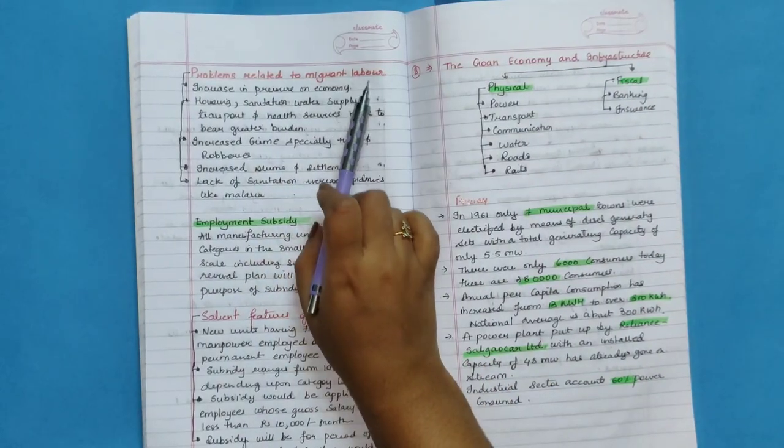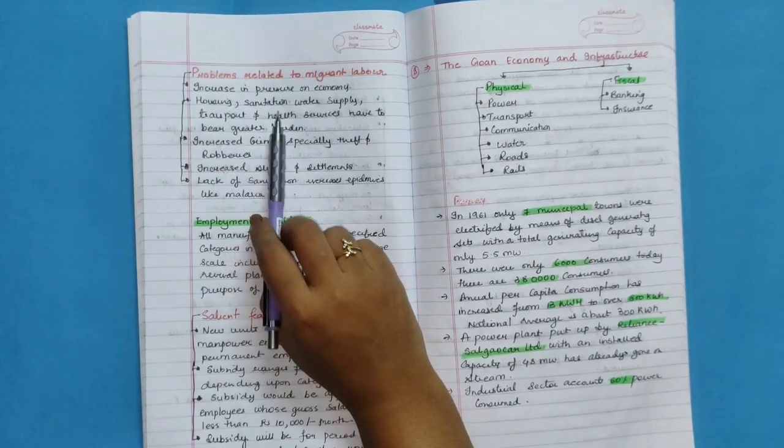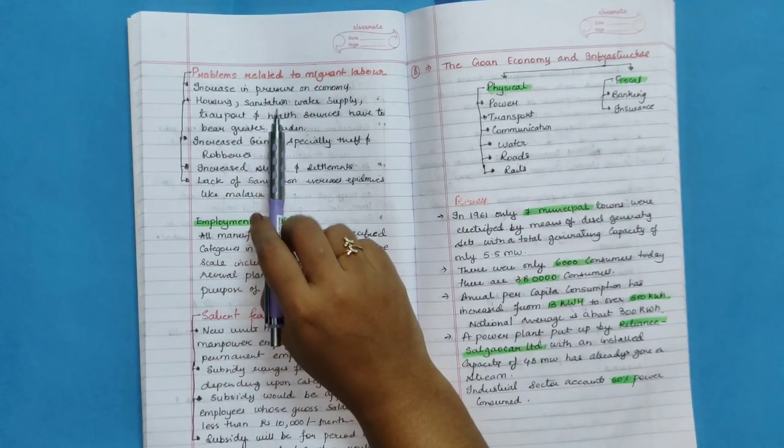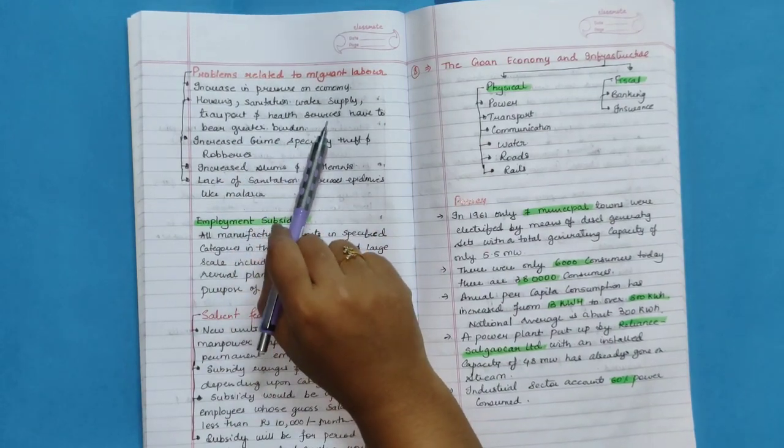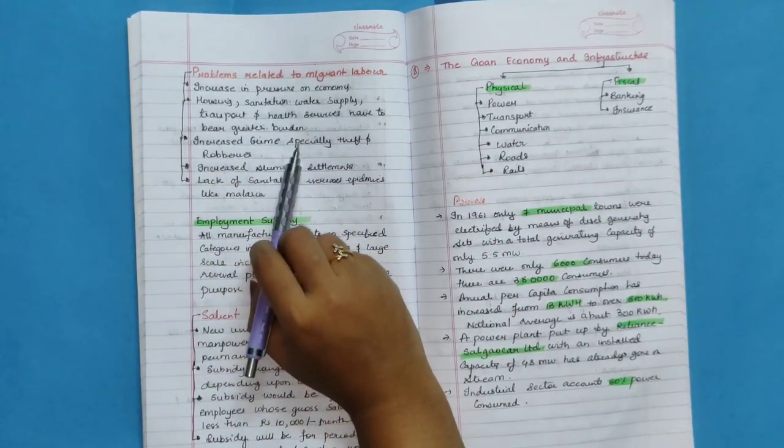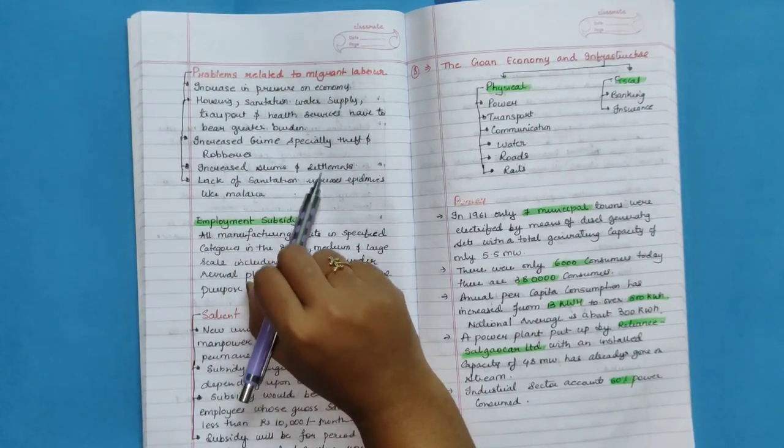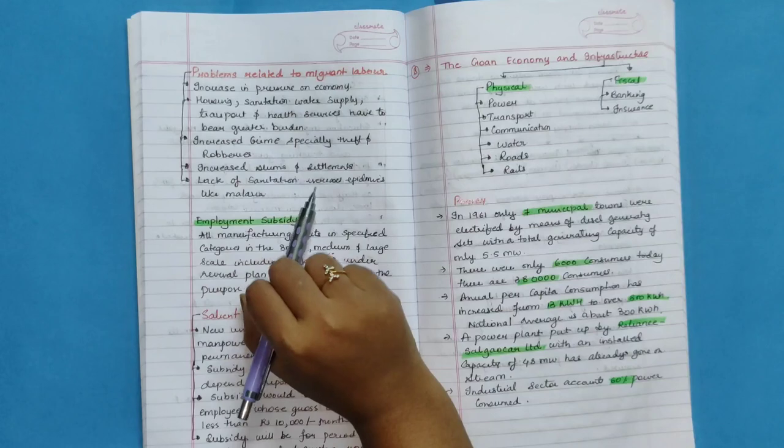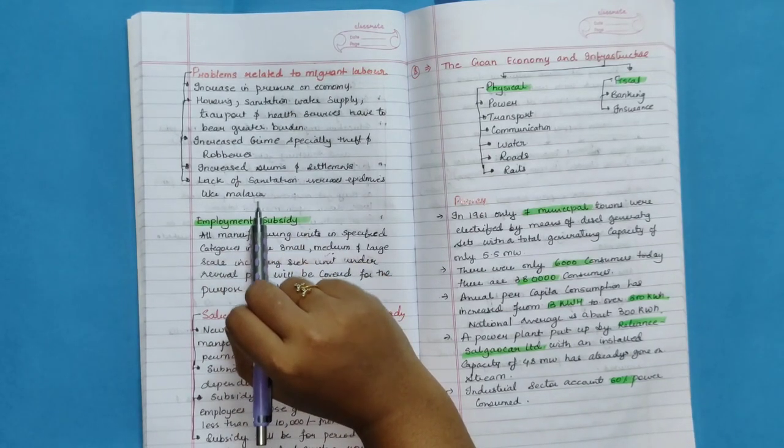Problems related to migrant laborer: Increase in pressure on economy, housing, sanitation, water supply, transport and health services have to bear greater burden. Increased crime, especially theft and robbery. Increased slum settlements, lack of sanitation, increases epidemics like malaria.